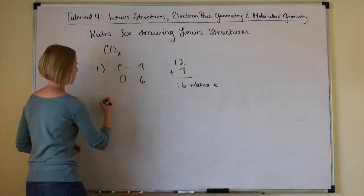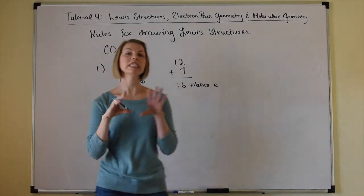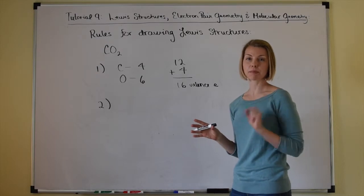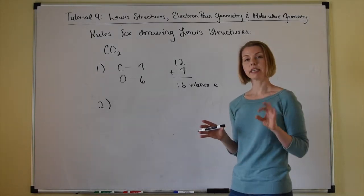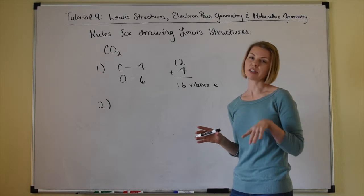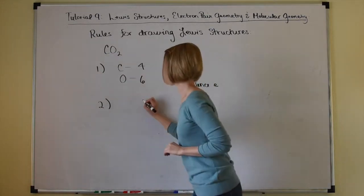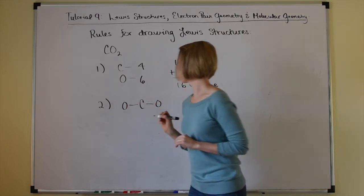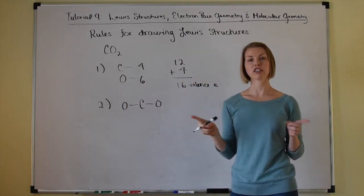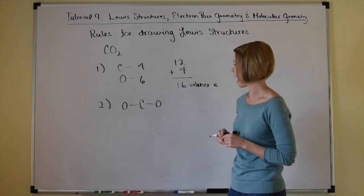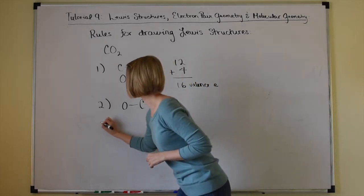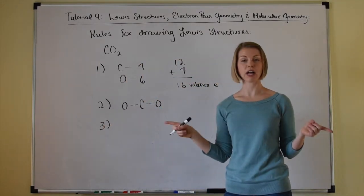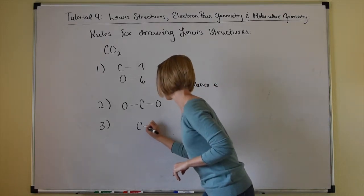Rule number two: show single bond connectivity. The central atom is typically the one there is only one of, so we put carbon in the center and show single bond connectivity to the oxygen atoms, which will be the terminal atoms. Rule number three: complete the octet on your terminal atoms — not the central atom.